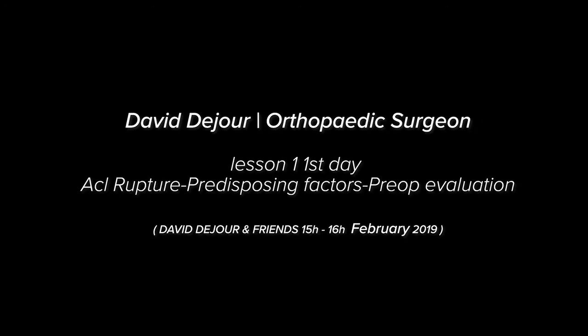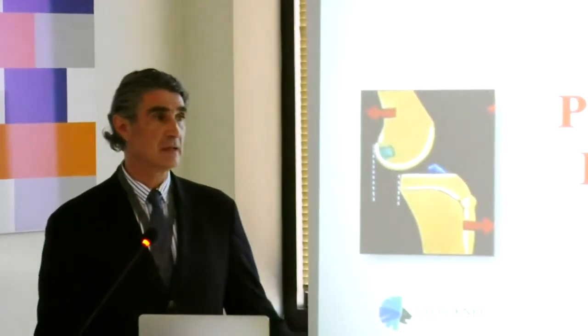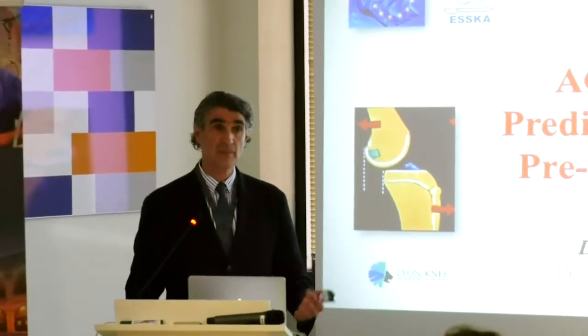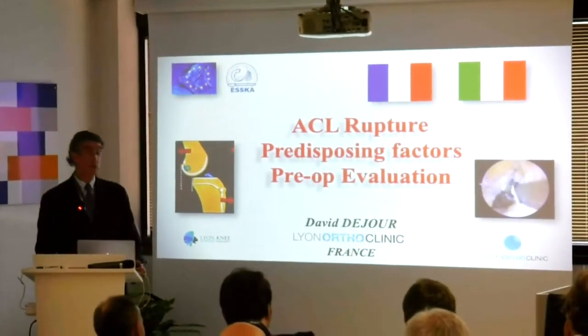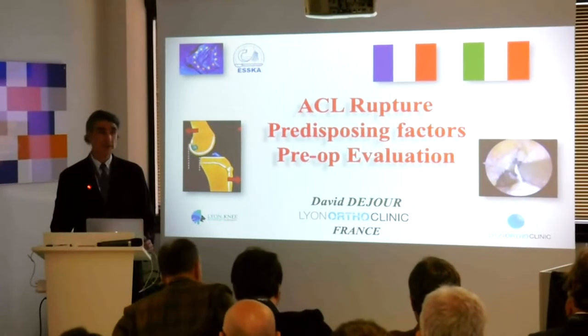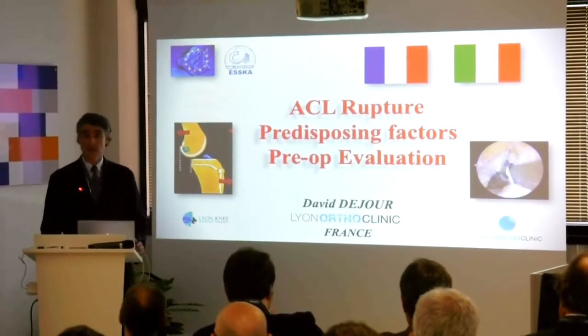I will present, but you can stop me whenever you want and we can discuss about the different things. Somewhere a presentation is a presentation, but when we exchange, sometimes it's even better. The first part will be about the predisposing factors and what we are looking for before doing an ACL, how to evaluate an ACL. The second will be about how to harvest a BTB, how to harvest hamstring, how to harvest a quadriceps tendon. I will speak about the outside-in technique that I'm using and why it's interesting when you do an ACL.